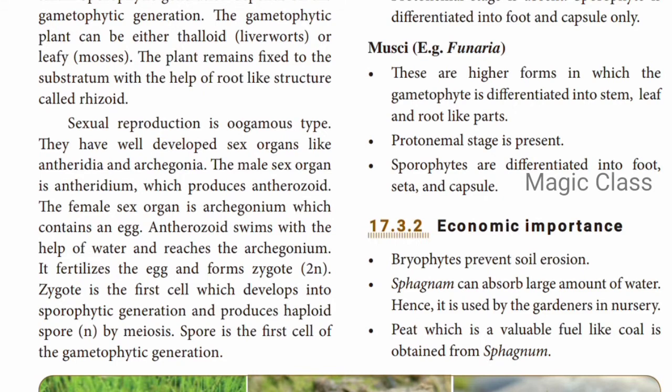In the gametophytic phase, the chromosome set is haploid (N — single set). In the sporophytic phase, it is diploid (2N — double set of chromosomes). The zygote is the first cell which develops into the sporophytic generation and produces haploid spores by means of meiosis. The spore is the first cell of the gametophytic generation.